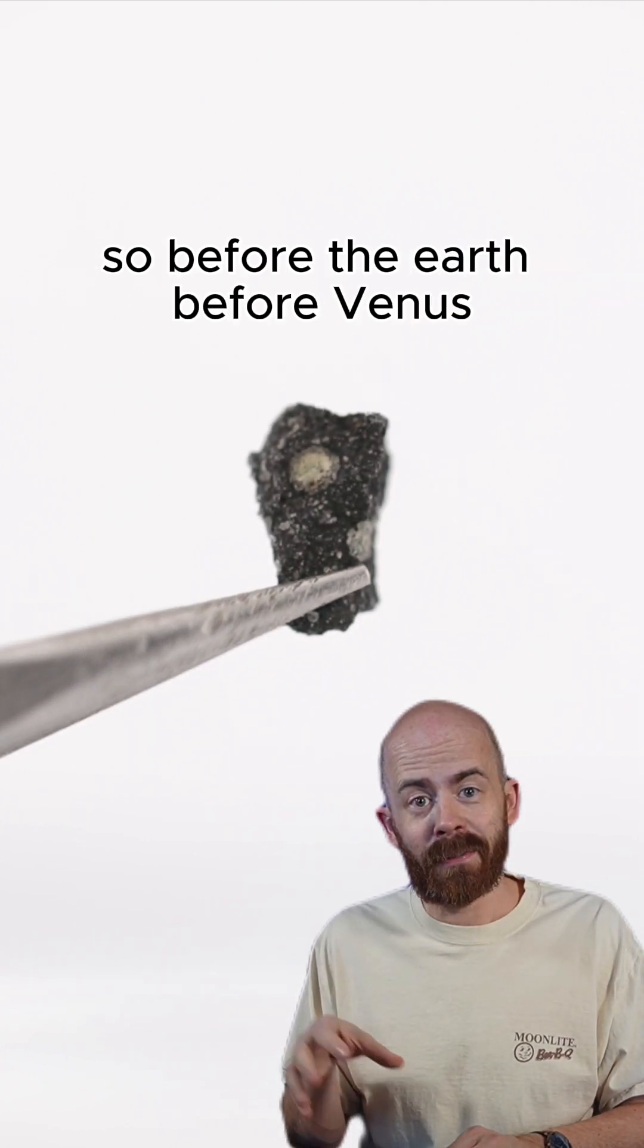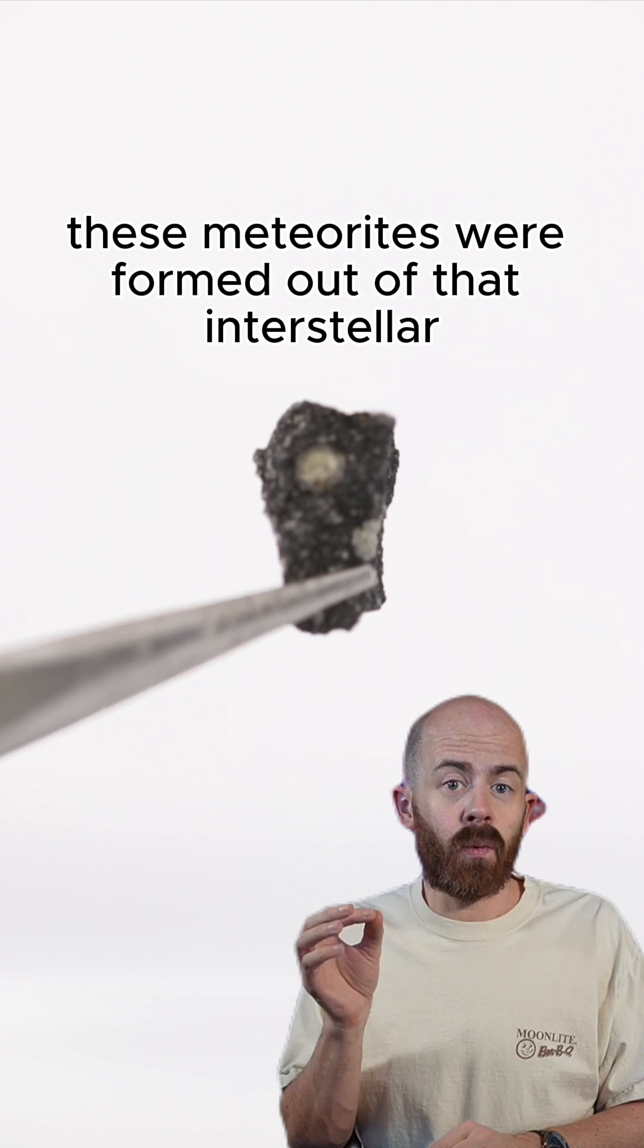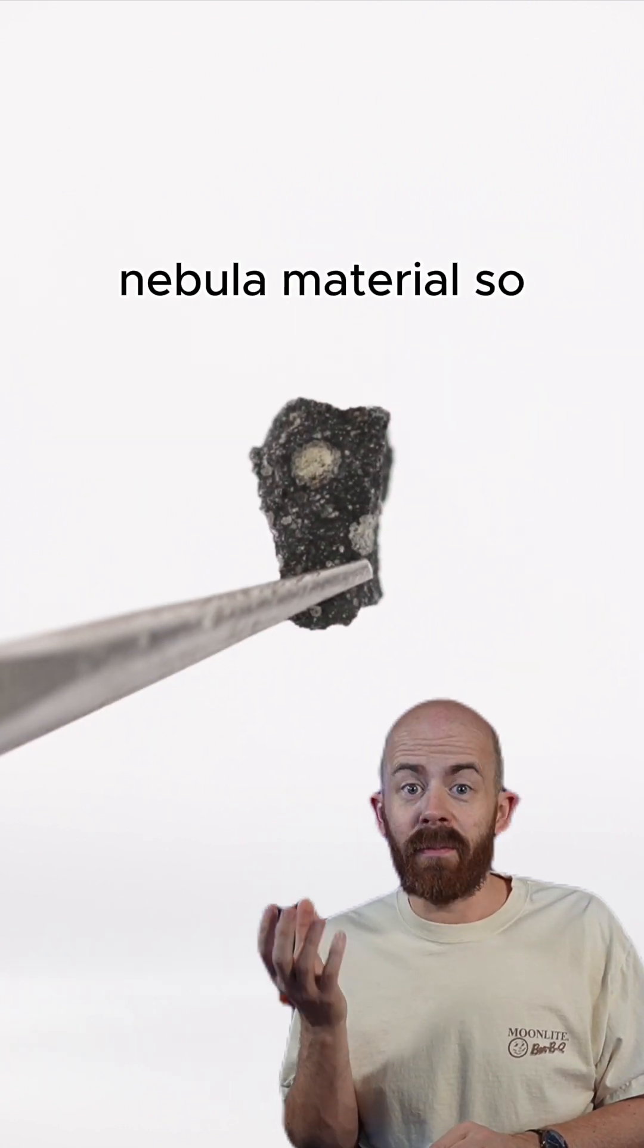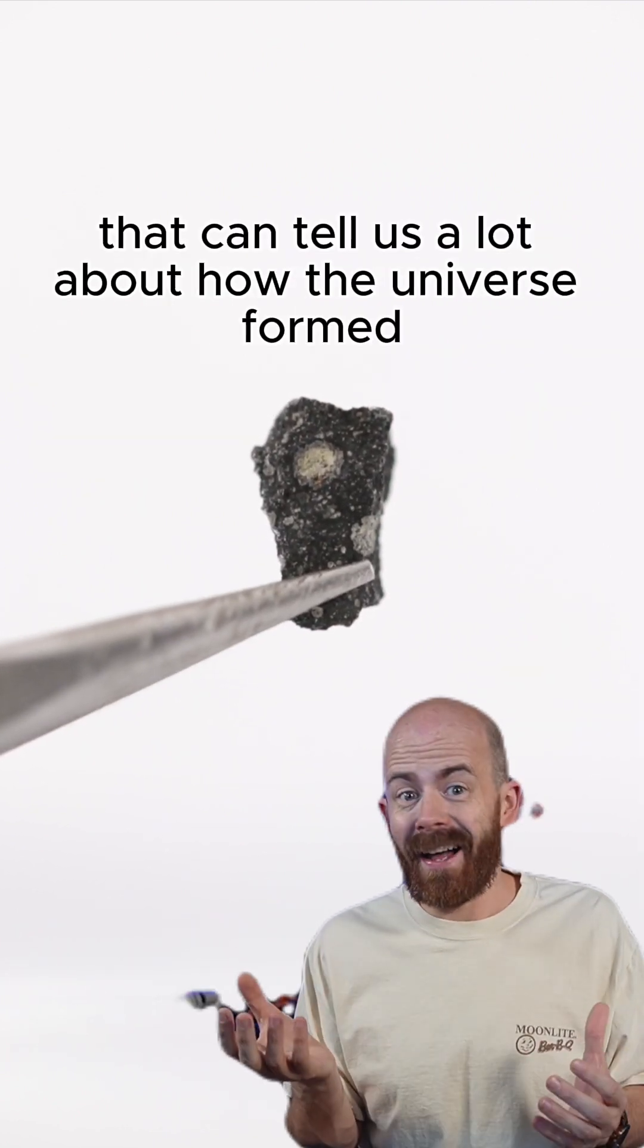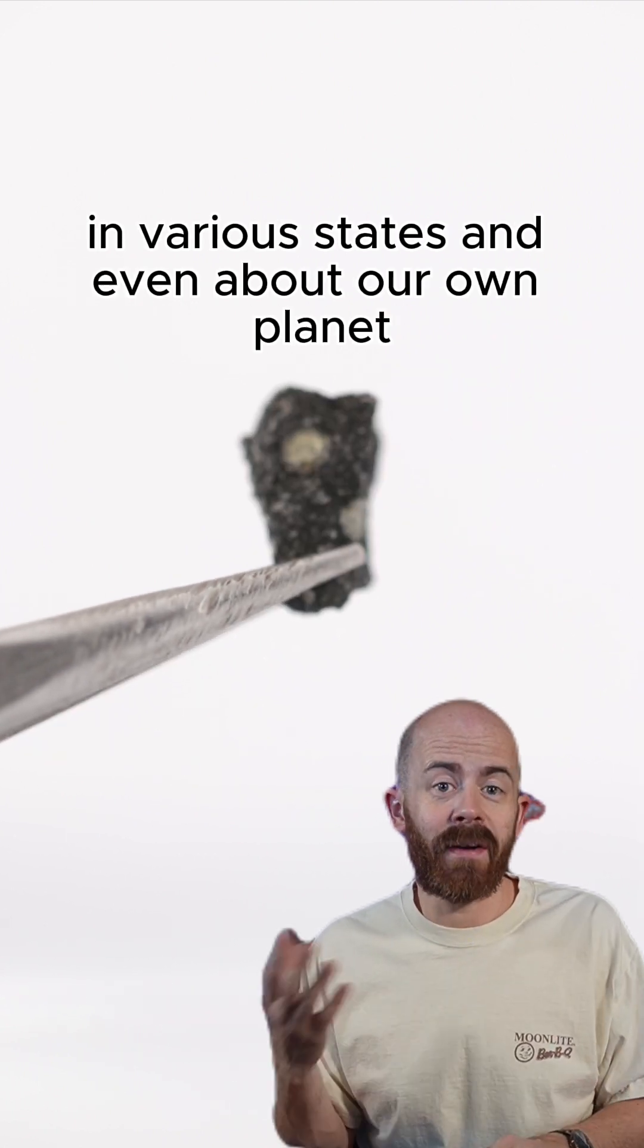So before the Earth, before Venus, before Mercury, before our solar system as we know it, these meteorites were formed out of that interstellar nebula material. So that can tell us a lot about how the universe formed in various states and even about our own planet.